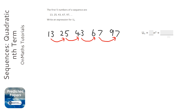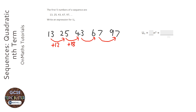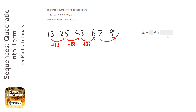If you've got a calculator you can just do 25 take away 13. If it's a non-calculator paper then you can just quickly do it in your head. I'm going to do this for a few of them. The next one goes up in 18, the next one goes up in 24, and the last one goes up in 30. So they're not going up by the same amount.